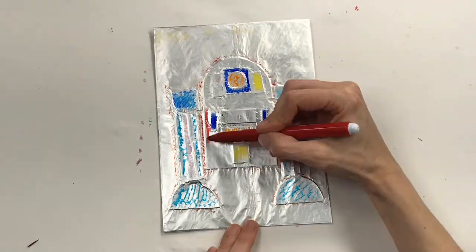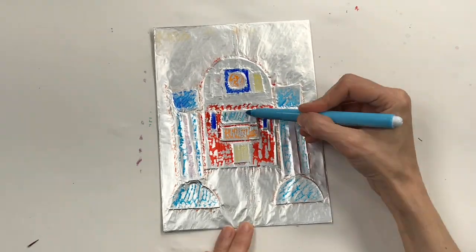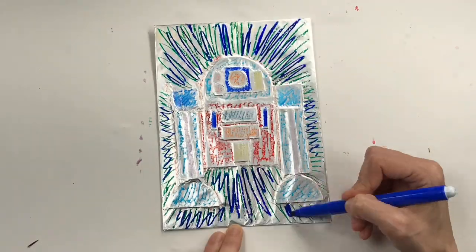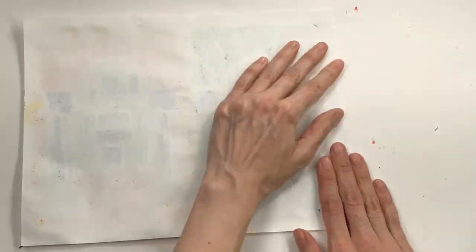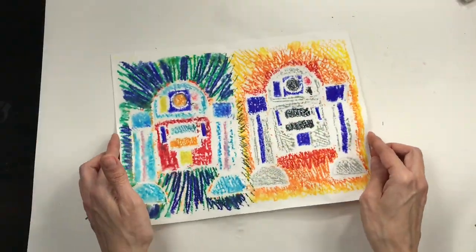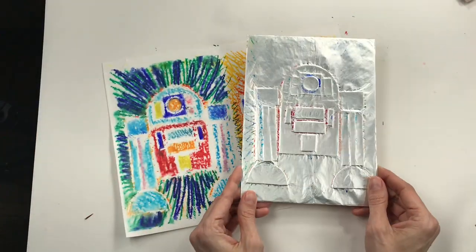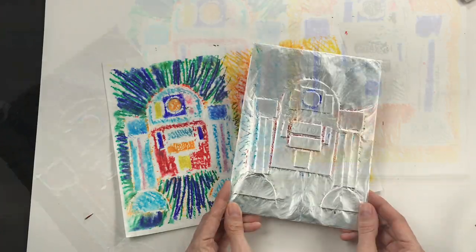You could do what's called a pop art style, meaning it's based in popular culture, like R2 is, using a variety of different colors too. You could make as many prints as you like, and then when you're finished, you could always color it with permanent markers. Have fun guys!